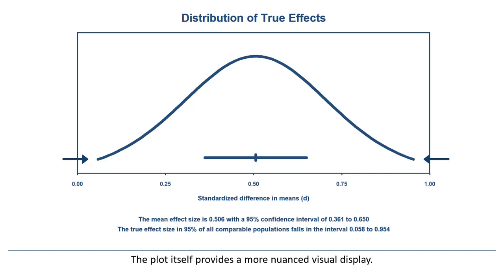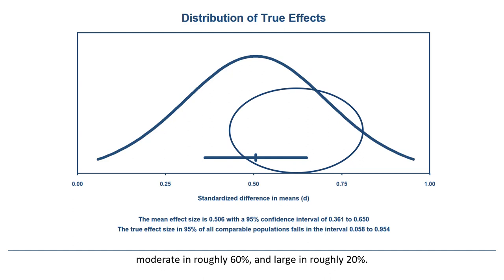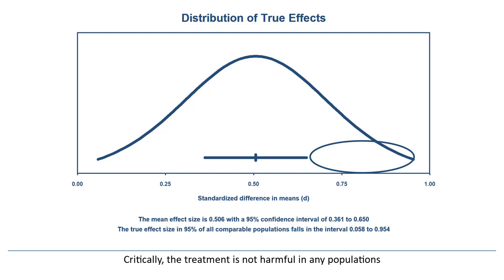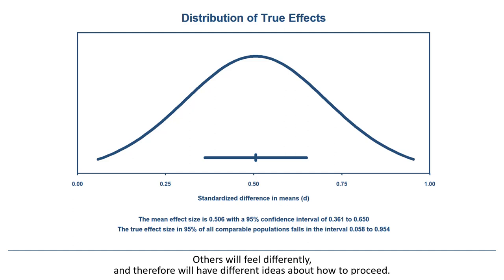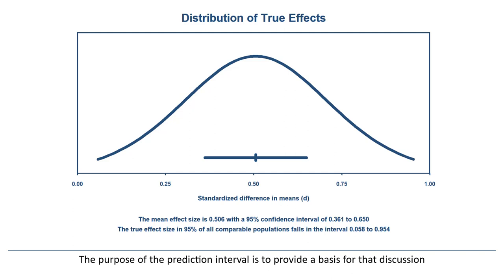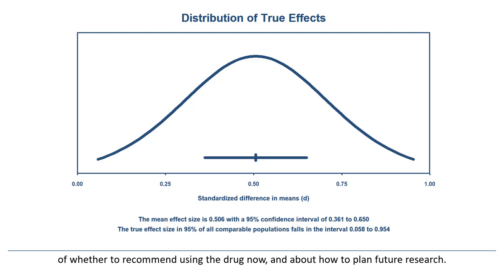Using the criteria I outlined above, we can get a sense that the impact of the treatment is small in roughly 20% of the populations, moderate in roughly 60%, and large in roughly 20%. Critically, the treatment is not harmful in any populations, at least not in the 95% displayed here. I should be clear that my criteria for saying that an effect size of 0.20 is small or that 0.50 is moderate is subjective — others will feel differently, and therefore will have different ideas about how to proceed. That discussion is both necessary and welcome.